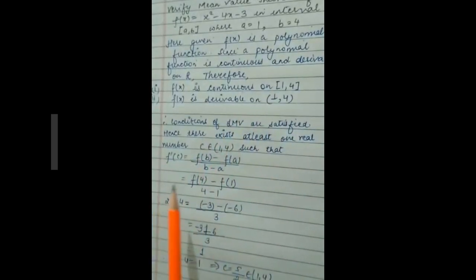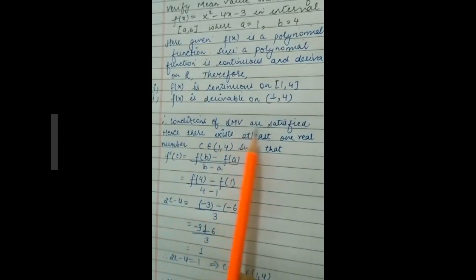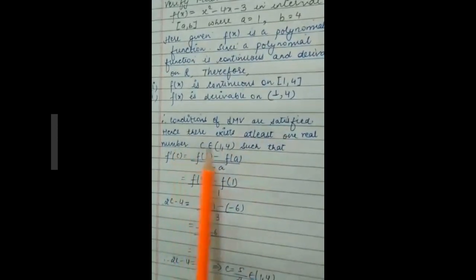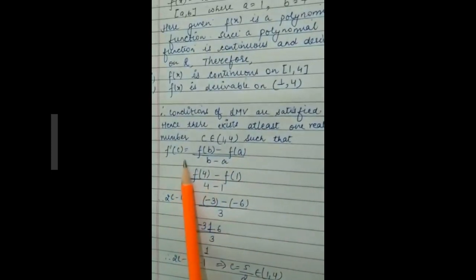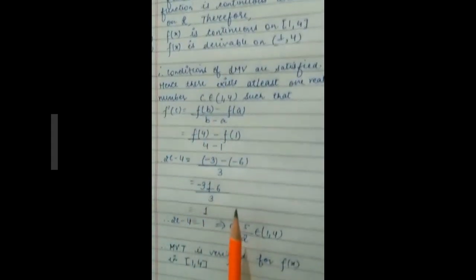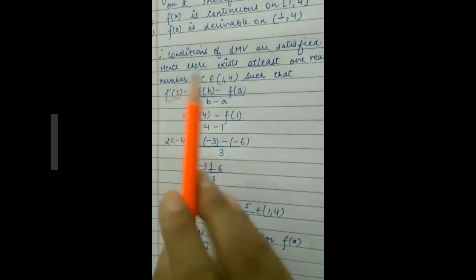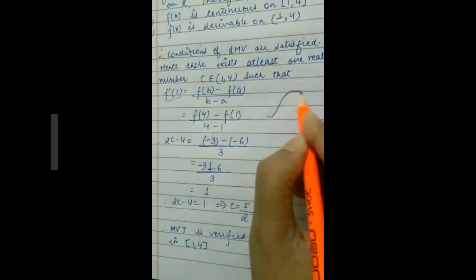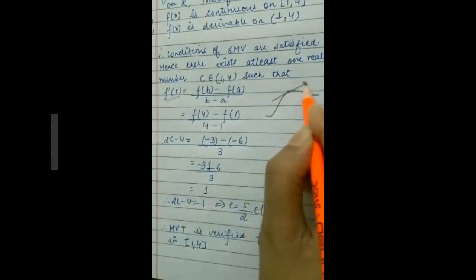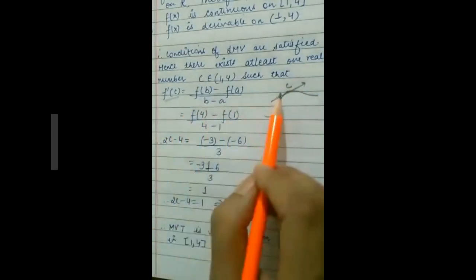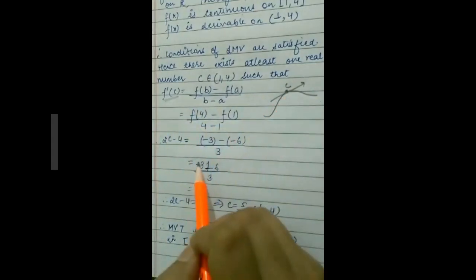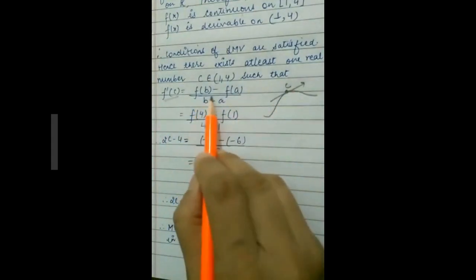Therefore f(x) is continuous on [1, 4] and derivable on (1, 4). There were only two conditions for MVT. So the conditions of the Mean Value Theorem are satisfied. Hence there exists at least one real c belonging to (1, 4) such that f'(c) = f(b) − f(a) / (b − a). Geometrically, f'(c) represents the slope of the tangent at the point c on the curve.